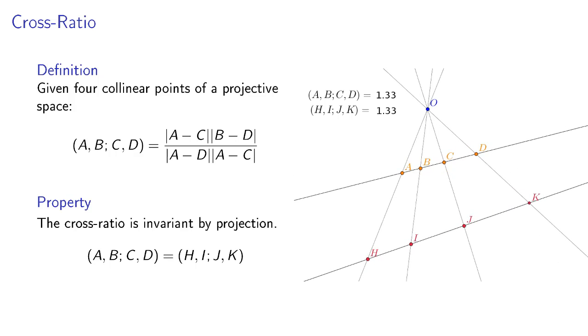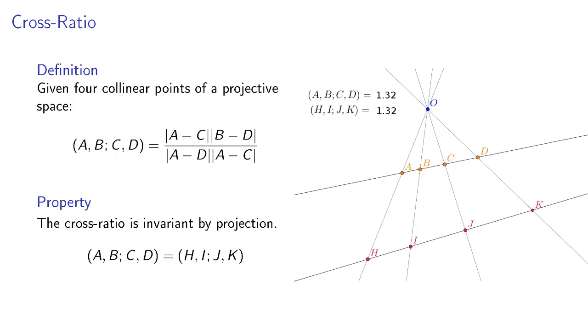On the other hand, moving the lines changes the value of the cross-ratio, but the two cross-ratios remain equal.